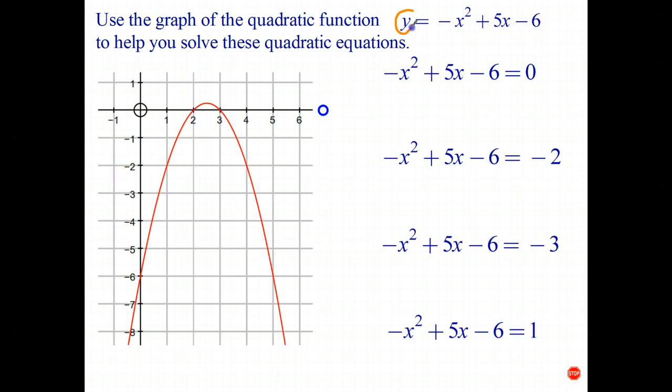Well once again what we've done is we've replaced the y coordinate with a 0. So where on this graph are the points with the y coordinate equal to 0? Well one of them is there and the other one's there. So when y is 0 the x coordinates are 2 and 3. So therefore our two solutions to this quadratic equation are x equals 2 or x equals 3.